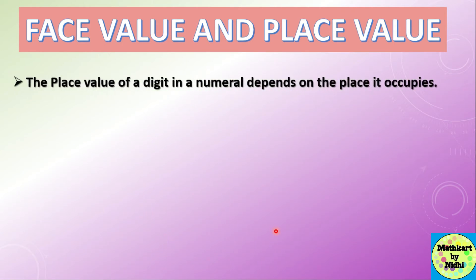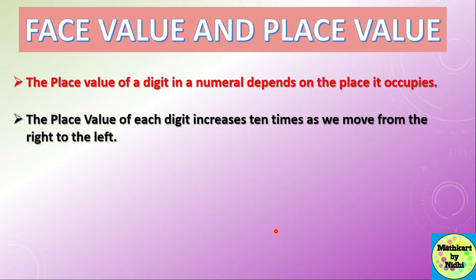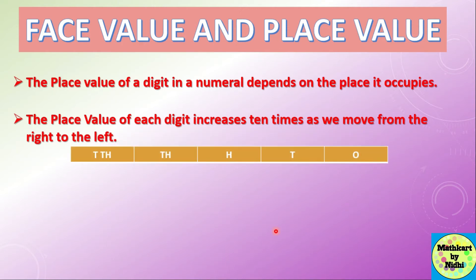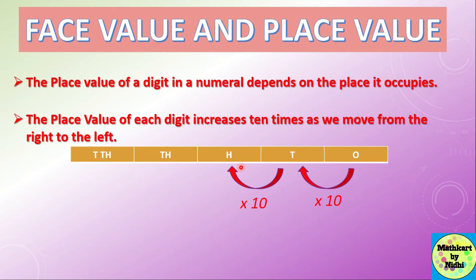The place value of a digit in a numeral depends on the place it occupies. The place value of a digit increases 10 times as we move from right to left. With a place value chart, when we move from ones to tens, it multiplies 10 times, and from tens to hundreds it also increases 10 times.